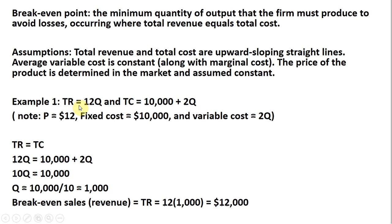Example one: total revenue equals 12 times Q. The 12 is the price in the market, so we're assuming the price in the market is $12. The firm takes that as a given — the firm is a price taker. The firm's total cost is $10,000 plus 2Q. The $10,000 part represents fixed cost, and the 2Q part represents the variable cost. So total cost is fixed cost plus variable cost.